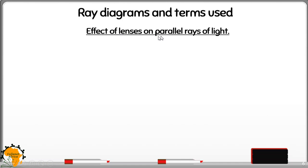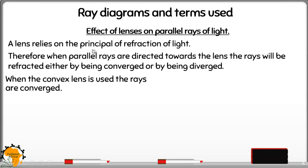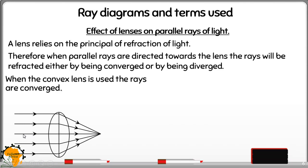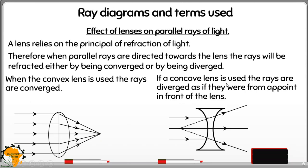We can look at the effects of lenses on parallel rays — what happens when parallel rays are incident to any type of lens. Remember, a lens relies on the principle of refraction of light. When a convex lens is used and parallel rays are directed to it, after refraction they meet at a point, so we say those rays are converged. When a concave lens is used, after refraction they spread out on the other side of the lens. To find where they come from, you extend them, and they appear to come from a point in front of the lens — so we say the rays are diverged.